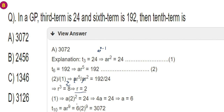With r equals 2, substituting back: ar squared equals 4a equals 24, so a equals 6. The 10th term is ar to the 9 equals 6 into 2 to the 9. Computing 2 to the 9 equals 512, so 10th term equals 6 into 512 equals 3072. Option A is the right answer.